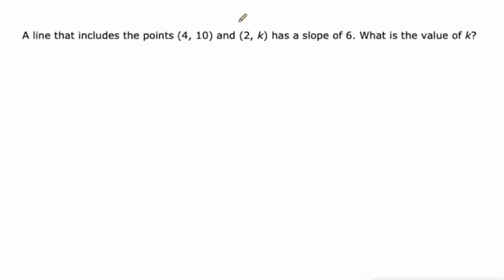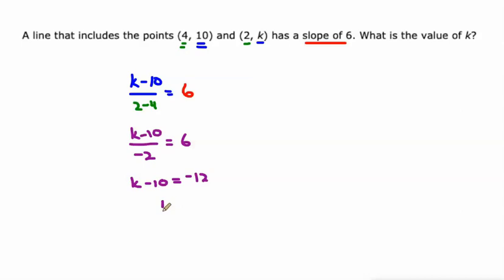This one's a little bit tougher because I see the X value is changing by 2, and it's going down, so that's a little bit more confusing. So how about we use the slope formula this time? Our change in Y, so I'm going to do K minus 10 over our change in X, 2 minus 4, is equal to our slope 6. And then we'll solve this equation. The first thing I'm going to do is subtract that 2 and 4 on the bottom of the fraction. Then I can multiply both sides by negative 2. And then add 10 to both sides.